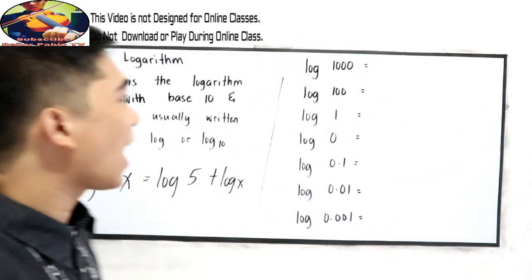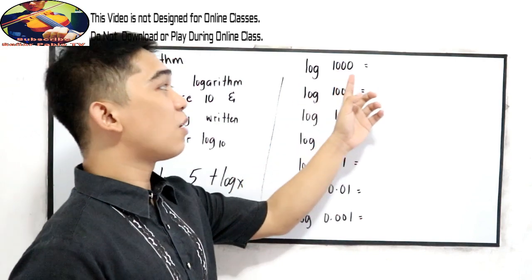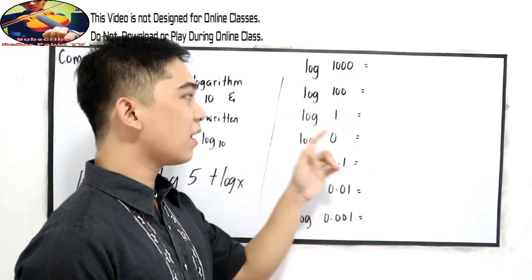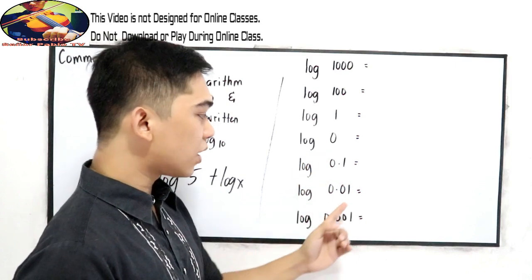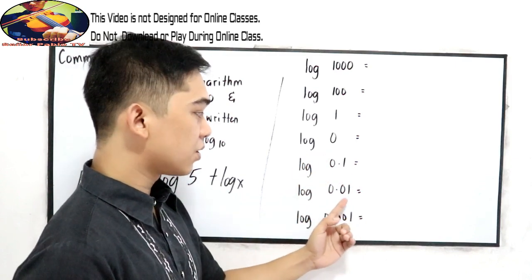Let us say we have log 1000, log 100, log 1, log 0, log 0.1, log 0.0001.